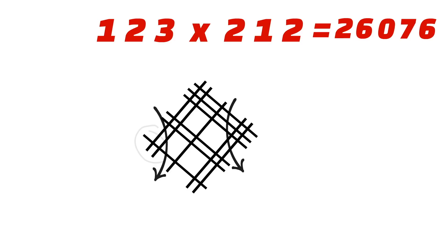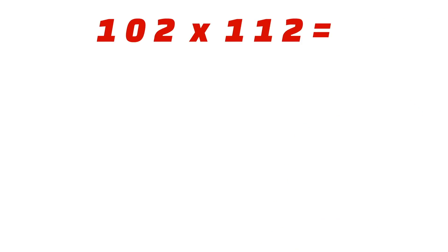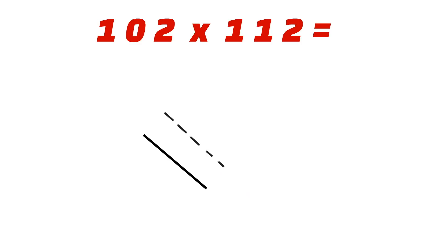Now let's take an example where 0 is one of the digits — for example, 102 × 112. The first digit is 1, so we draw one line. The next digit is 0, so we are not supposed to draw any line. I'll draw a dotted line for your understanding, but we are not going to consider any intersection point with this dotted line. The next digit is 2, so leaving some space, we draw two lines.